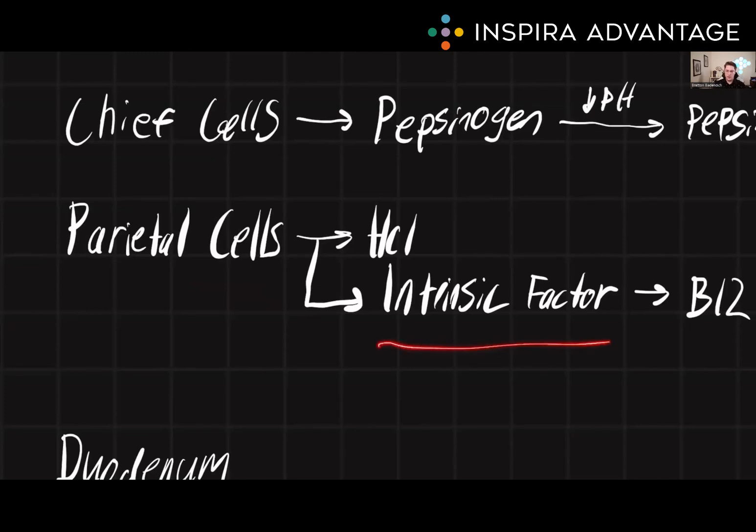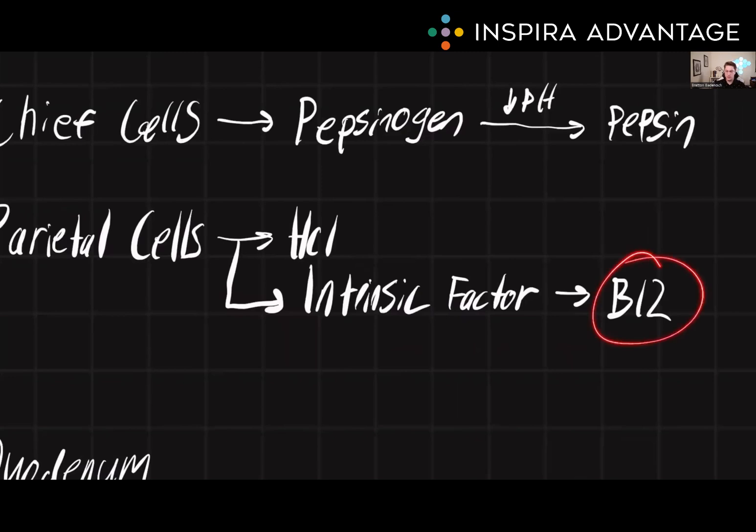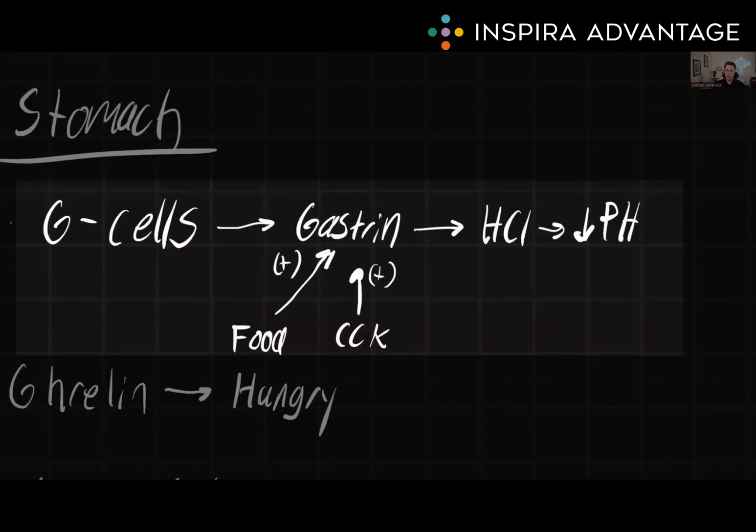Intrinsic factor is a glycoprotein that helps in the absorption of vitamin B12 in the small intestines, which is an essential vitamin for life. Gastrin is a hormone produced by G cells in the stomach and duodenum. In addition to its role in the digestion process, gastrin also plays a role in regulating the pH of the stomach by stimulating the release of hydrochloric acid.